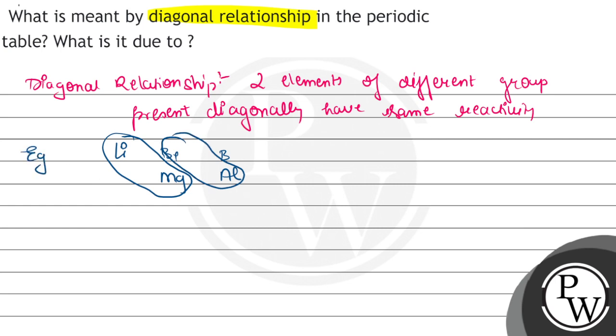And why is it due to? Due to the same properties. Like if you consider ionization energy, going left to right ionization energy increases because size decreases, and going down the group ionization energy decreases because size increases.